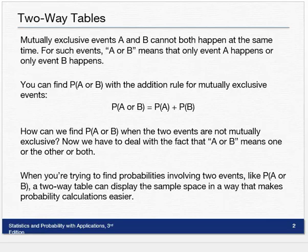Mutually exclusive events A and B cannot both happen at the same time. For such events, A or B means that only event A happens or only event B happens. They don't both happen. Now you can find the probability of A or B with the addition rule for mutually exclusive events, where you just add the two individual probabilities up. No big deal.